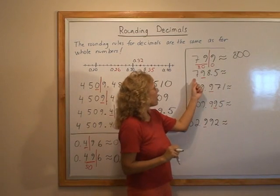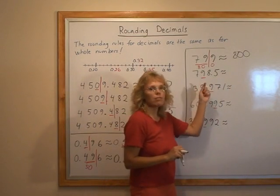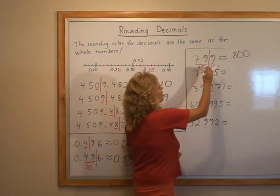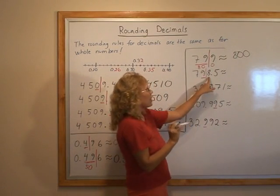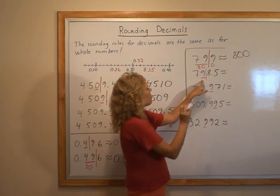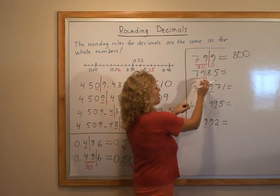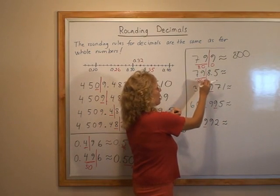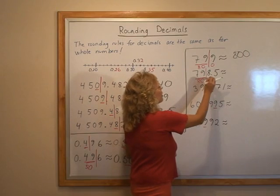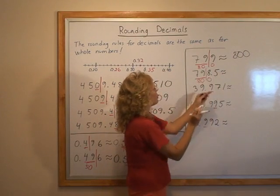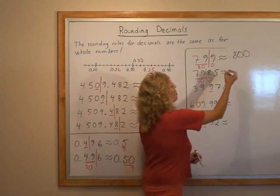This one is very similar. Here we have 798.5 rounded to the nearest ten. I draw my line here. It's 8. It's going to be rounded up again. And it's 9. So I can think of my 79 changing to 80. And then these go to 0 or are cut off.